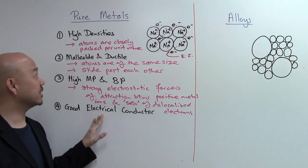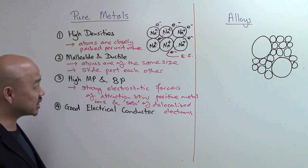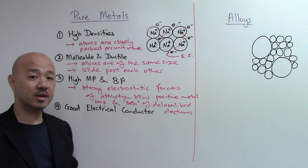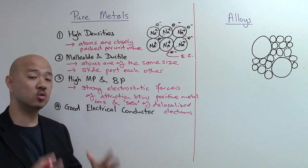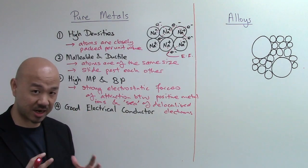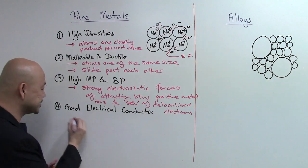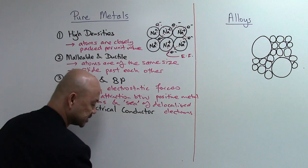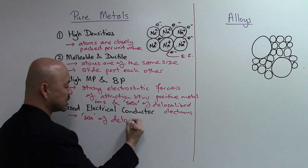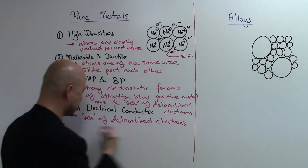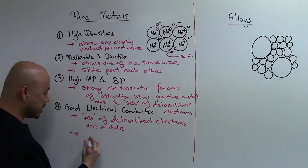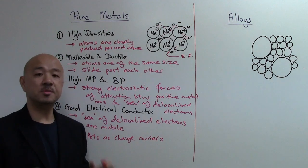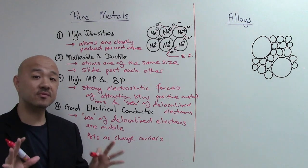The fourth property is that metals tend to be good electrical conductors. This is linked to the metallic bonding discussed previously. The delocalized electrons are free-moving and mobile, which means they can act as charge carriers and help to conduct electricity. In the exam, write: 'the sea of delocalized electrons are mobile and therefore act as charge carriers, which helps to conduct electricity.'